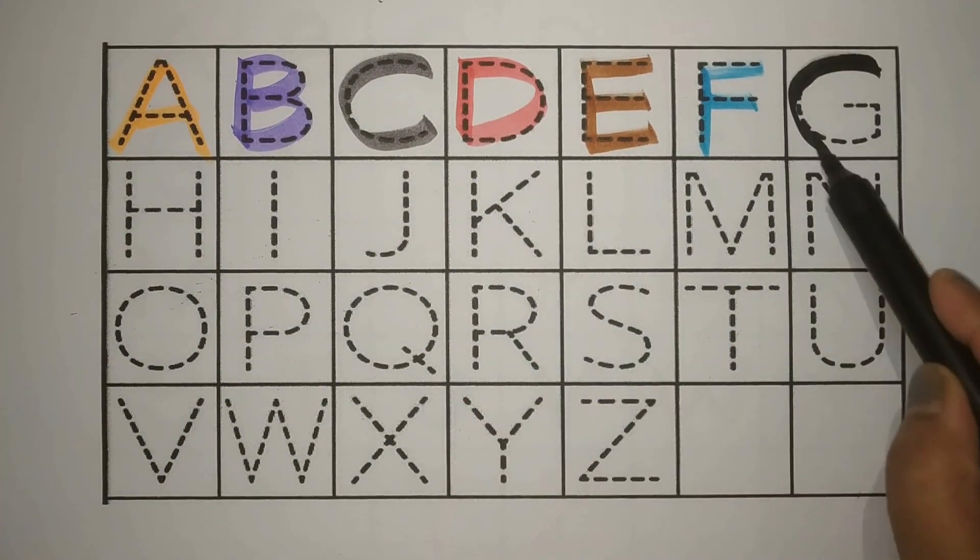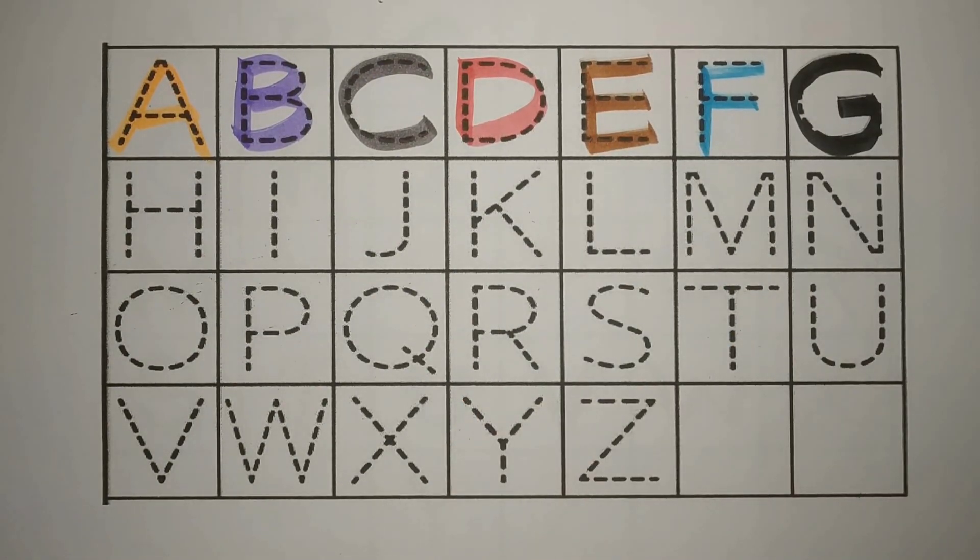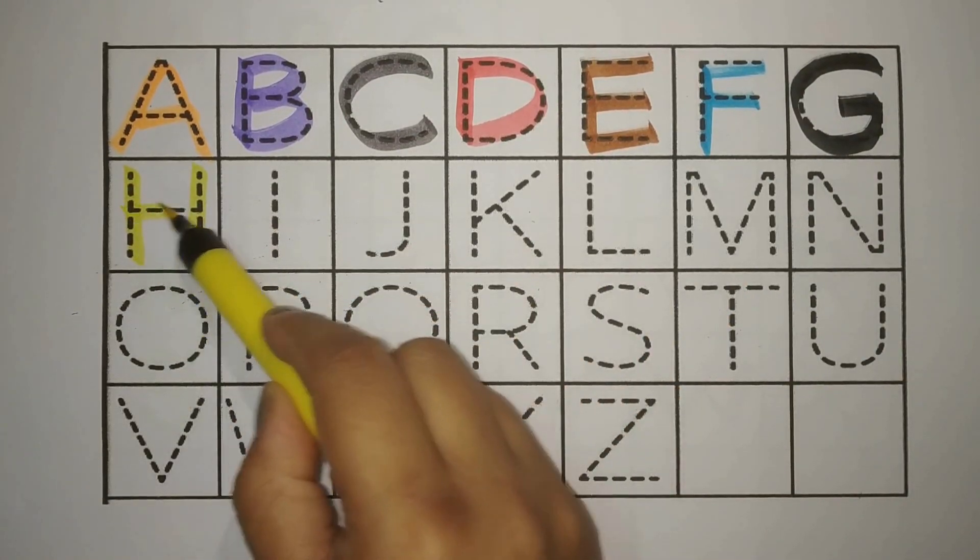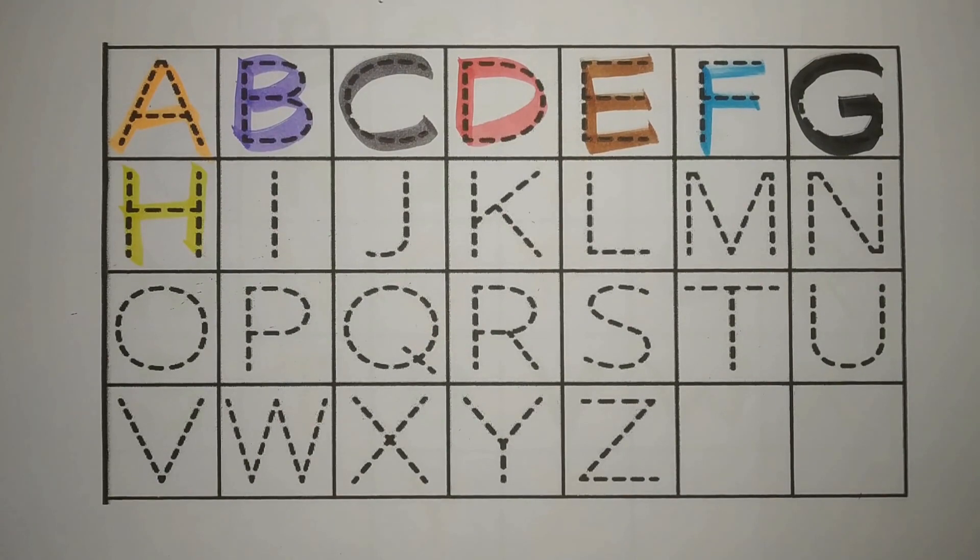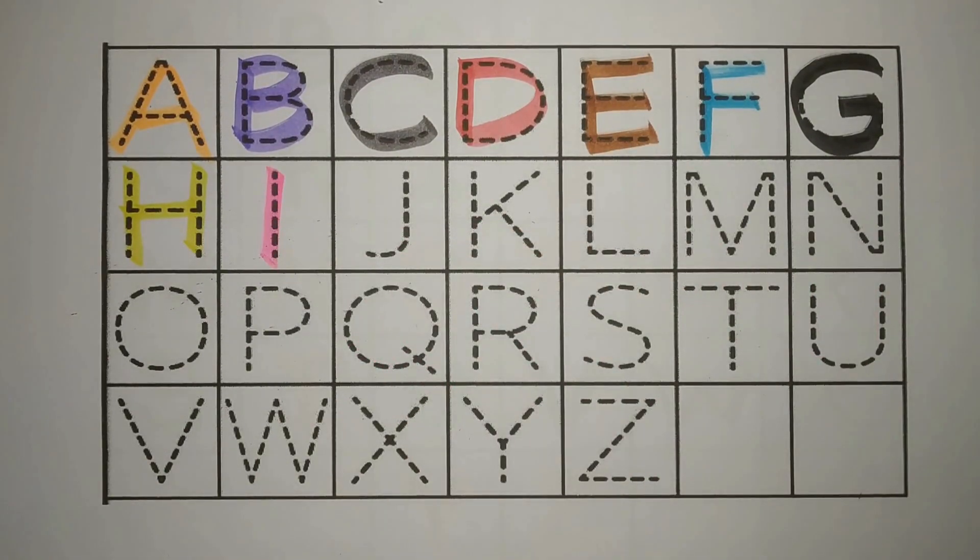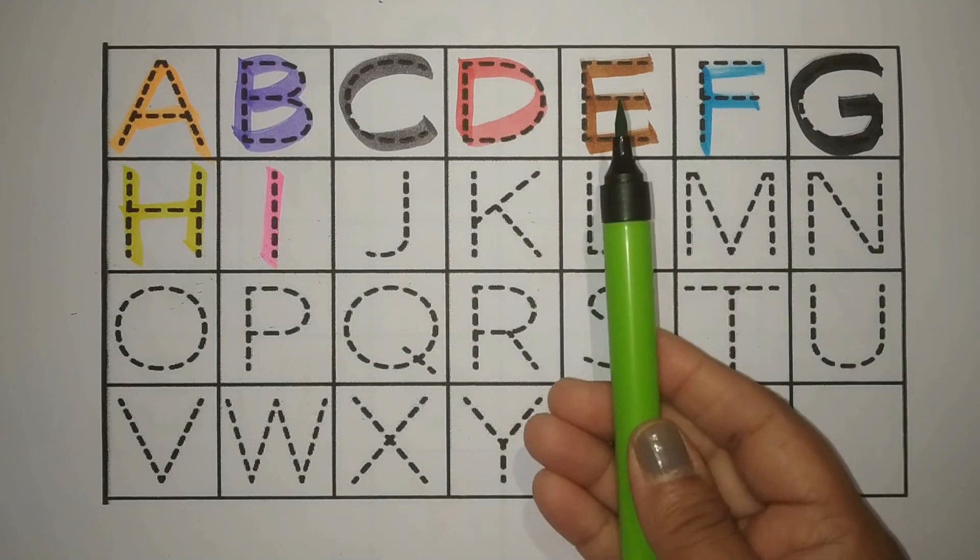G, G for Grass. Ghas. Yellow. H, H for Heart. Jhopdi. Pink. I, I for Ice. Burf. Green.